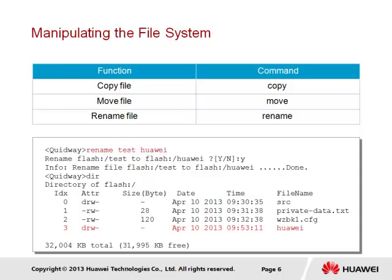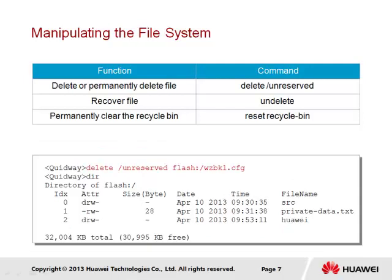We can verify the rename change through the dir command. In terms of file deletion, there are a number of commands that support this operation. The delete command is used to effectively erase a file from the file system; however, the process will in fact transfer the file to a recycle bin from where deleted files can be retrieved if necessary. The command used to retrieve a file that has been deleted from the recycle bin is the undelete command. If it is wished that the file be permanently deleted, the delete command together with the unreserved parameter should be used. A file in the recycle bin can also be permanently deleted using the reset recycle bin command. The example here shows the use of the delete command to permanently delete a configuration file in the flash storage device, and the dir command verifies its deletion.